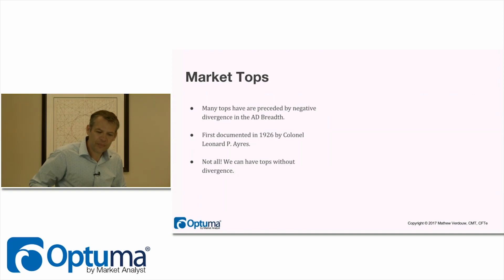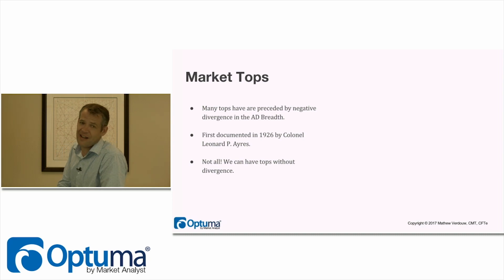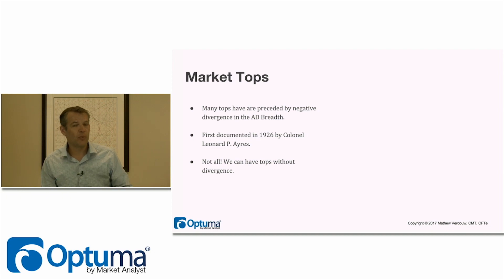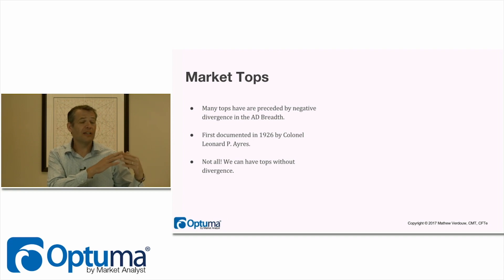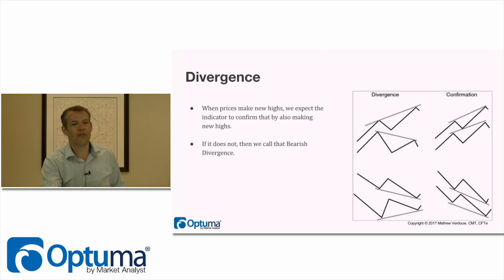Many market tops are preceded by negative divergence in the advance-decline line, first documented in 1926 by Colonel Leonard Ayres, who was the first to write about it regularly. He was counting how many constituents were going up and down and having great success doing so. You can get tops without divergence, so while negative divergence is a very clear sign a top is about to be put in, it's not required — you can have a top that doesn't show divergence.